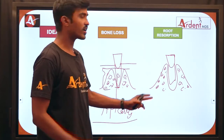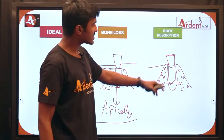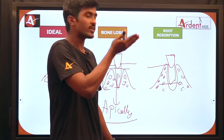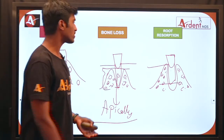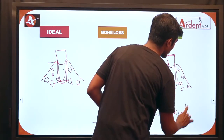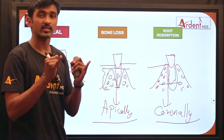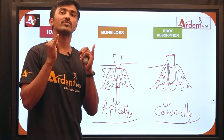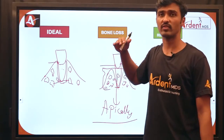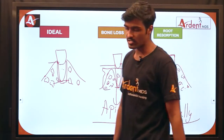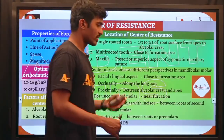In the case of root resorption, the root apex shifts toward the crown portion of the tooth. According to the definition, the center of resistance is one-third to one-half from root apex to alveolar crest, so the center of resistance also shifts coronally. In summary: in an ideal tooth, center of resistance is at one-third to one-half of root length; with periodontal bone loss it shifts apically; with root resorption it shifts coronally. These are the two main factors affecting the location of center of resistance.